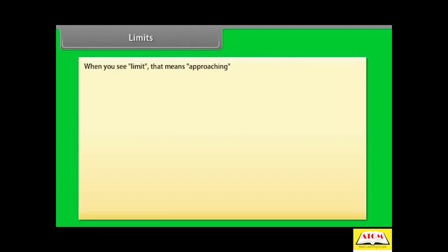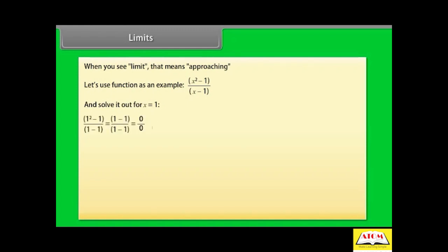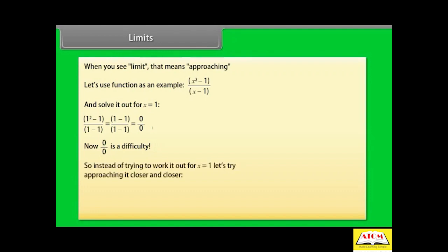Limits. When you see limit, that means approaching. Let us use this function as an example: (x² - 1) / (x - 1). Let us work it out for x = 1. We get (1 - 1) / (1 - 1) = 0/0. Now, 0/0 is a difficulty — we don't really know the value of 0/0. So we need another way of answering this. Instead of trying to work it out exactly at x = 1, let us try approaching it closer and closer.